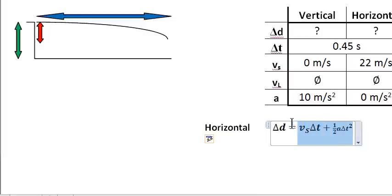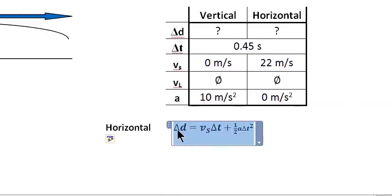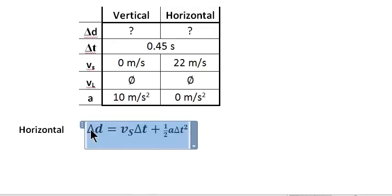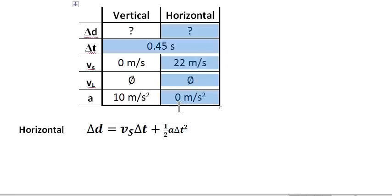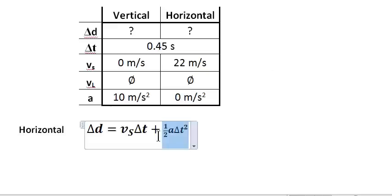Now again, as I've said before, this thing is a little hard to solve when both of these terms are not equal to 0. But horizontally, we have acceleration equal to 0, which means this term goes away. And we're left with this.